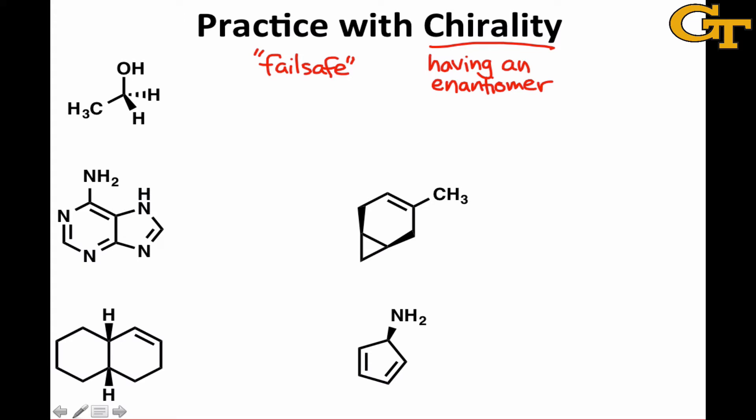When we apply the fail-safe method, if we find that the mirror image is not the same — in other words, we cannot perfectly overlay the two structures with no differences — then we know immediately that the original molecule is chiral, and in fact, that the molecule we drew is the enantiomer of the original molecule. So the fail-safe method has the added bonus of generating the enantiomer by design.